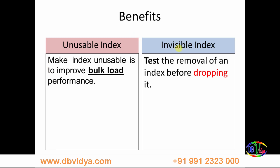In which scenario do we go for invisible indexes? You can use an invisible index for testing the removal of an index before dropping it. Suppose you suspect that some indexes are not being used by the application — before dropping it, you can make it invisible and then observe the performance of those forms, reports, or whatever programs. Once your analysis is done, if you find the application is not using it, you can drop the index.